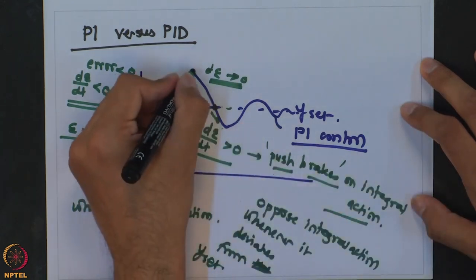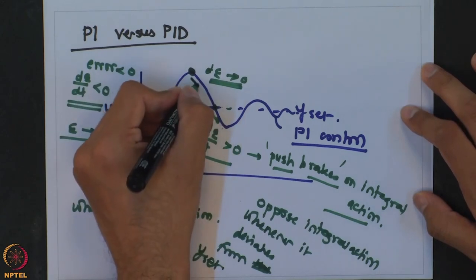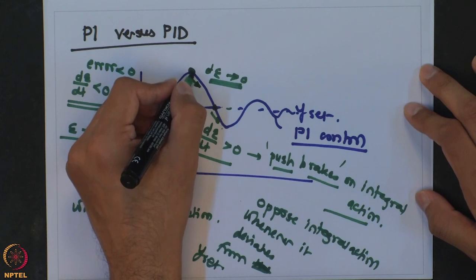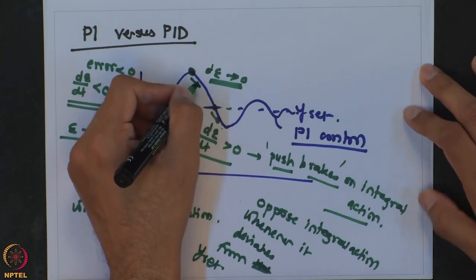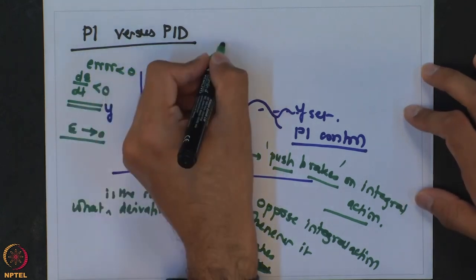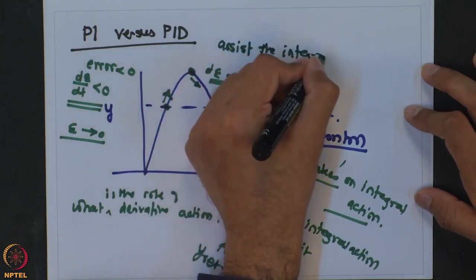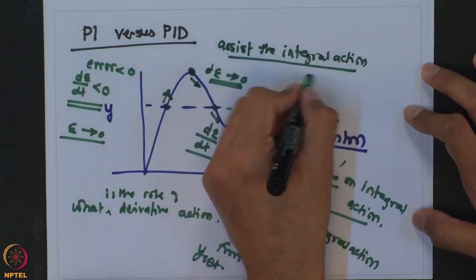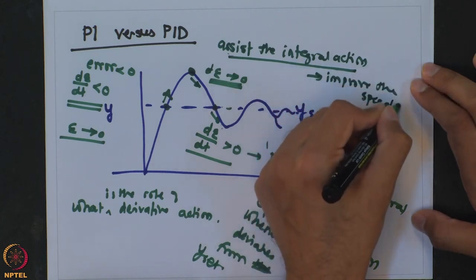When the system reaches a point below the set point and tries to move towards it, the derivative action tells us that the system is moving in the correct direction. In that case it is going to assist the integral action, and in that way it will improve the speed of response.